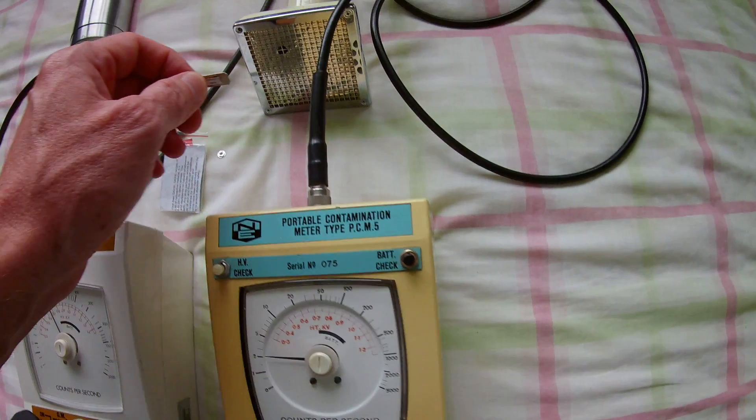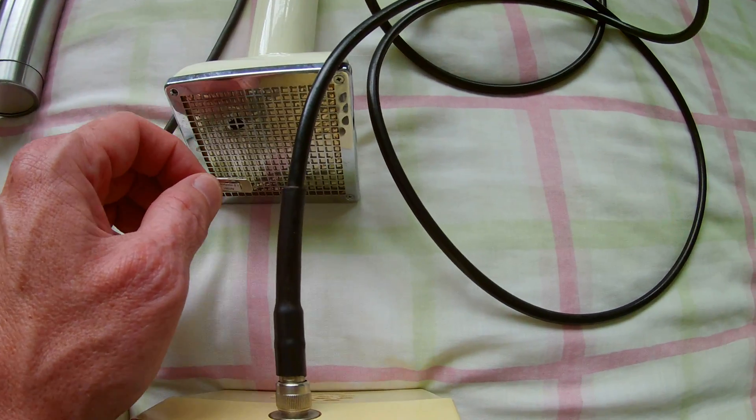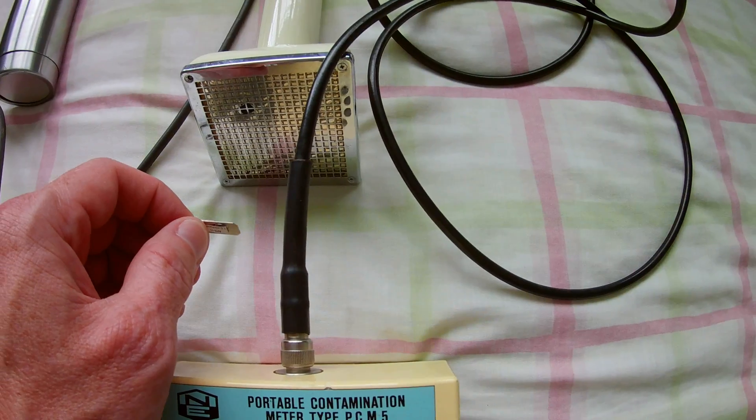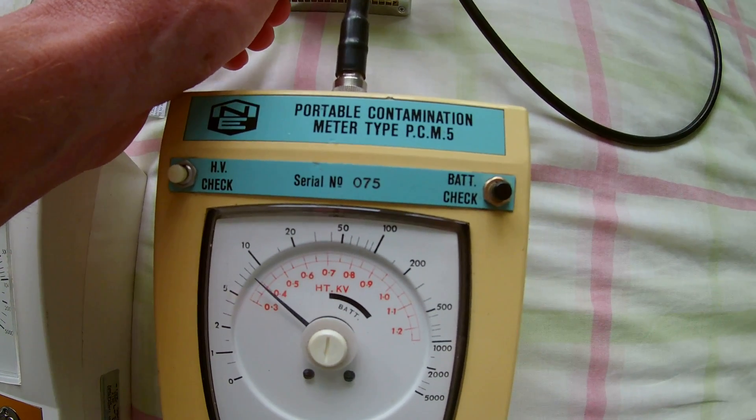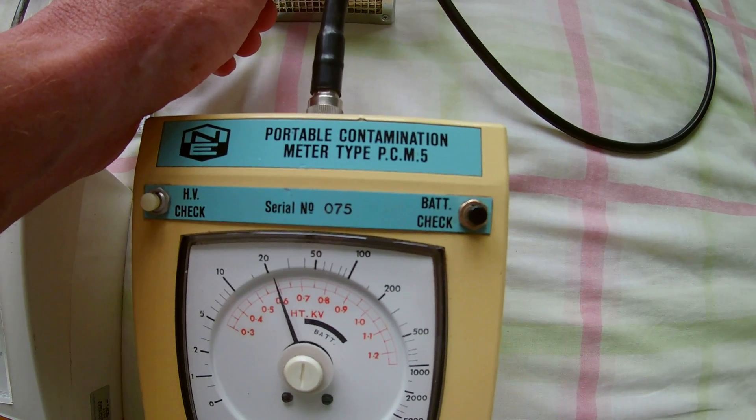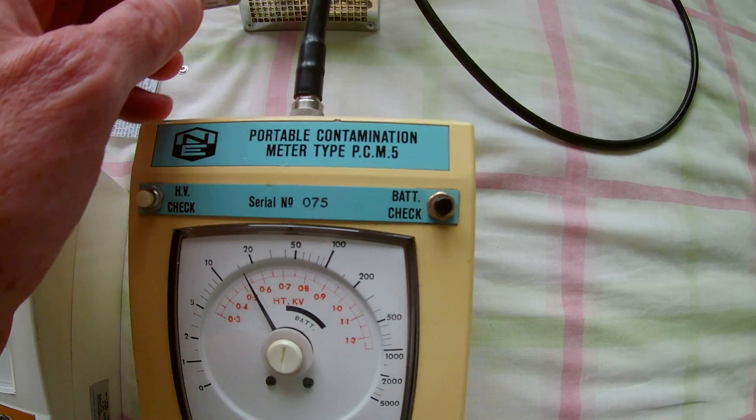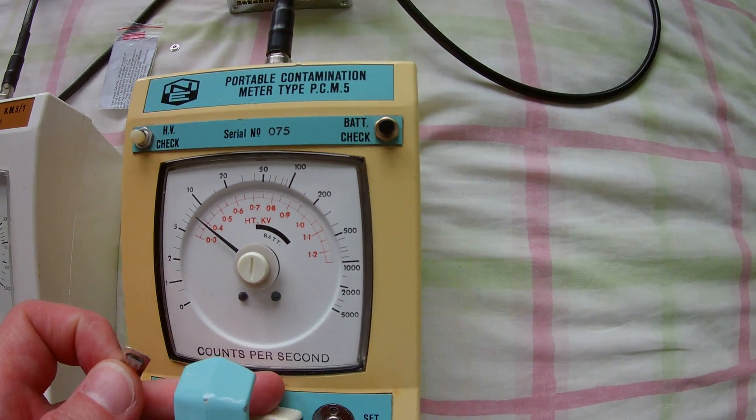One problem is that some of the alpha particles are taken. Now at this distance we're getting quite a count rate, but it's low energy gamma rays being detected in the beta gamma channel.